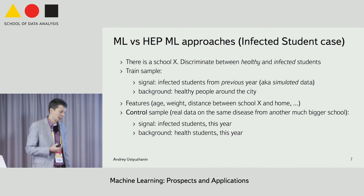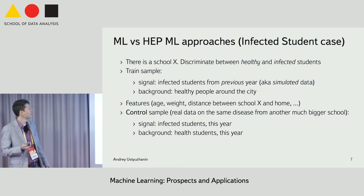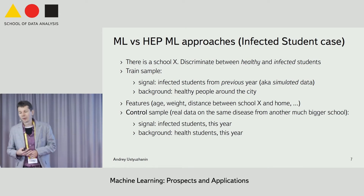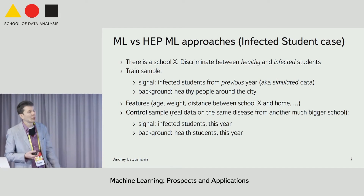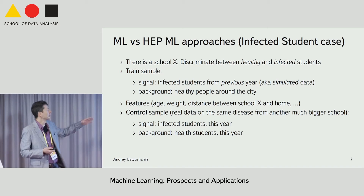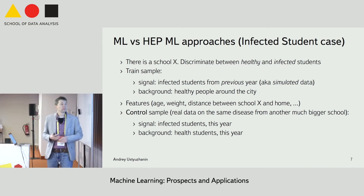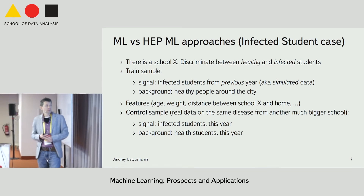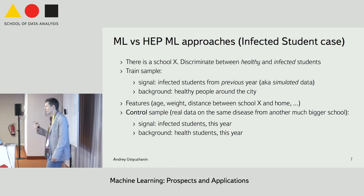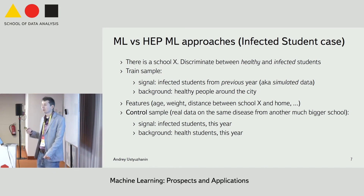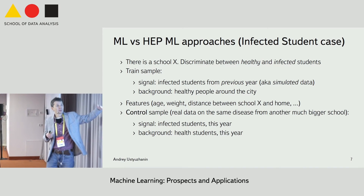Another interesting thing is that the problem in high-energy physics is different from the problem statement in machine learning. Take a look at this toy example: a school acts to discriminate between healthy and infected people. We get a training sample where the signal is infected students from the previous year, similar to simulated data, so it's not directly relevant to what we have at the moment. The background is healthy people around the city. We need to check that the model is not biased towards picking this year's data from the previous year.